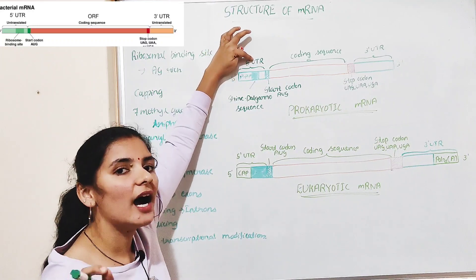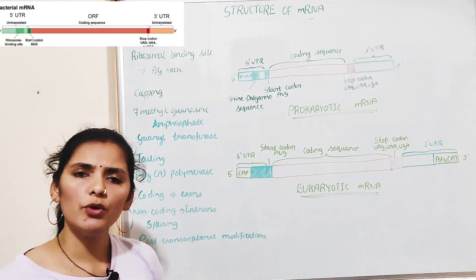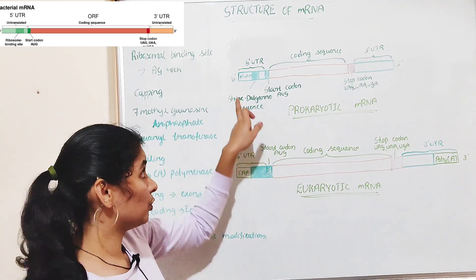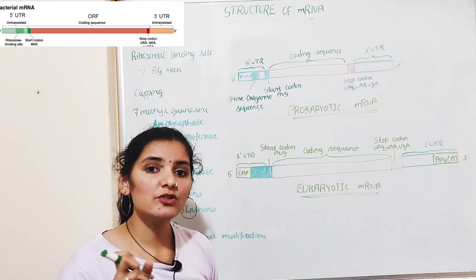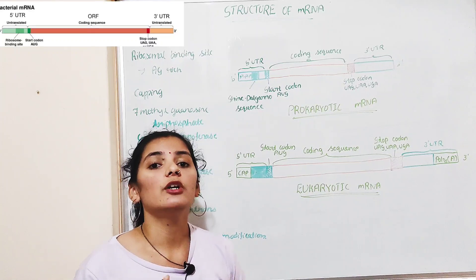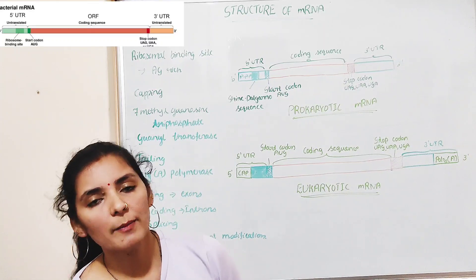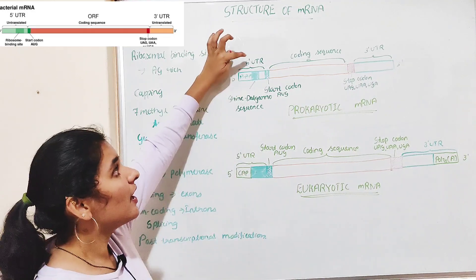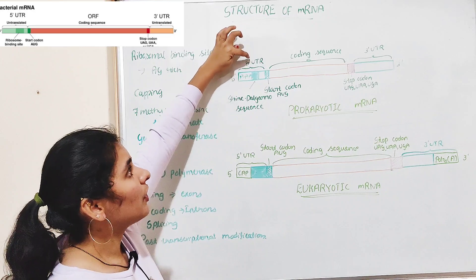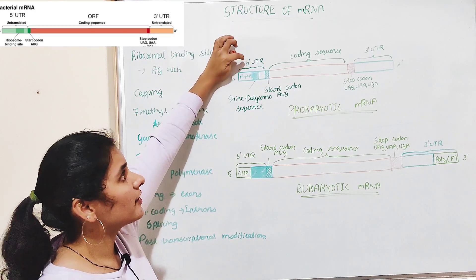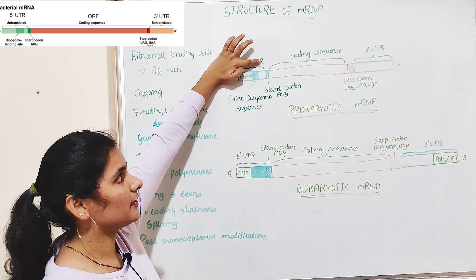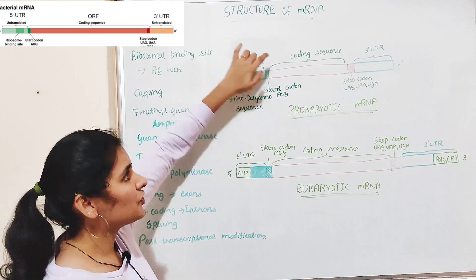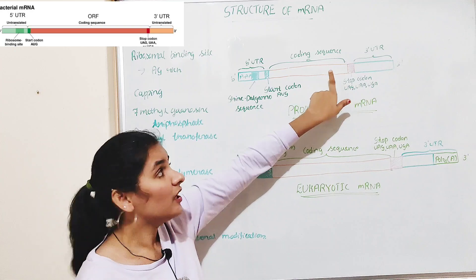UTR means untranslated region — a region that is not translated. So although it consists of a sequence of nucleotides or codons, it will not code for any amino acid during translation or protein synthesis. That is why it is called the untranslated region. Because it is present toward the 5' end, it is called the 5' untranslated region, or 5' UTR.